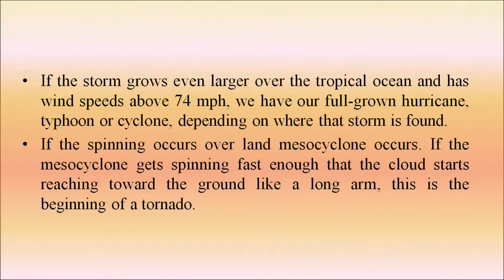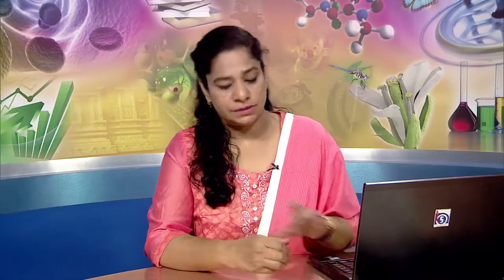If the spinning occurs over land, a mesocyclone forms. If the mesocyclone spins fast enough, the cloud starts reaching toward the ground like a long arm — that is the beginning of a tornado. If the cloud's arm reaches all the way to the ground and grabs hold, it becomes a full tornado, ready to suck up everything in its path like a giant vacuum cleaner.